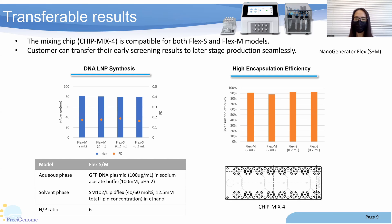Next, we used the Nanogenerator FLEX-M system to prepare DNA lipid nanoparticles, using a GFP reporter gene as an example. The DNA lipid nanoparticles synthesized by FLEX-M have an average diameter of around 80nm, a PDI value below 0.2, and a DNA encapsulation efficiency as high as 90%. PC Genome also provides another version, FlexS, for small-scale production. The minimum production volume of FlexS is only 200μL, which is perfect for screening purposes.